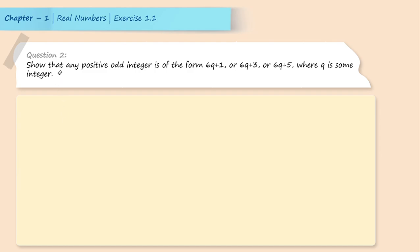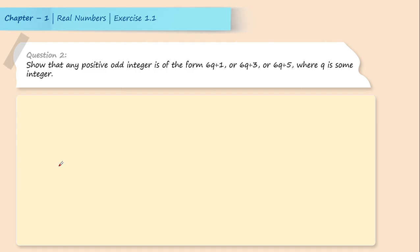Hi everyone. Today we are given this question: show that any positive odd integer is of the form 6q plus 1, or 6q plus 3, or 6q plus 5, where q is some integer. So let us start with the solution.